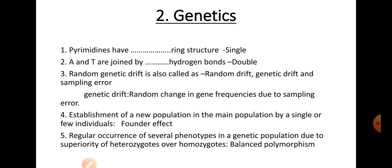A and T are the bases joined by how many hydrogen bonds? A and T are joined by double (two) hydrogen bonds, and G and C are joined by three or triple hydrogen bonds. This you need to remember.